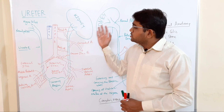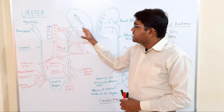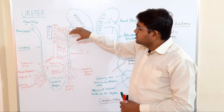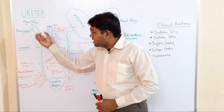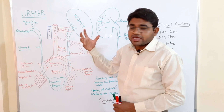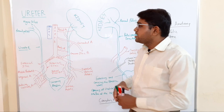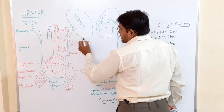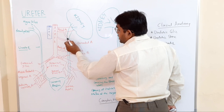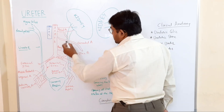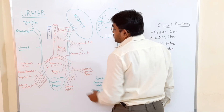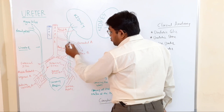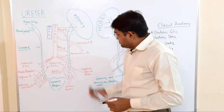The course of the ureter: the ureters start from the renal pelvis. In the kidney there is a renal sinus, and within the renal sinus there are major calyces — two to three — which converge forming the renal pelvis. The renal pelvis runs medially and downward, and at the lower pole of the kidney it continues as the ureter proper.